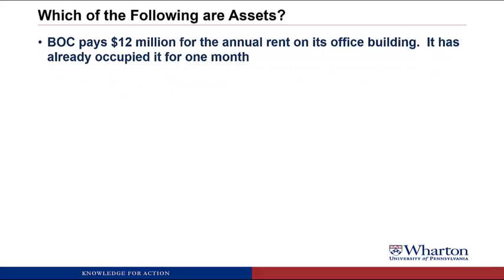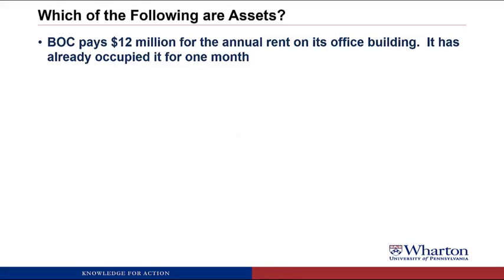BOC pays $12,000,000 for the annual rent on its office building, and it has already occupied it for one month. This is an asset — we're going to call it prepaid rent. It meets the first criteria because in a market transaction we paid for the right to occupy space in this office building for 12 months. But note that the value of the benefits is only $11,000,000, not the $12,000,000 we paid, because we've already used up one month of future benefits. So we have prepaid rent worth $11,000,000.